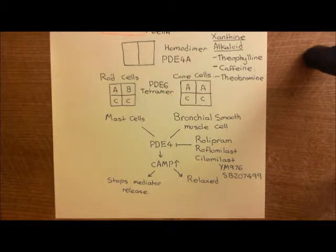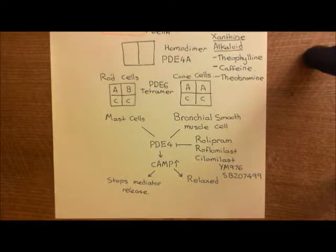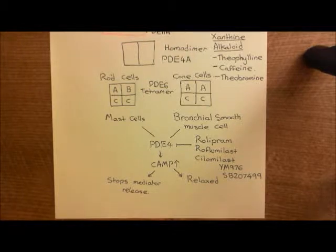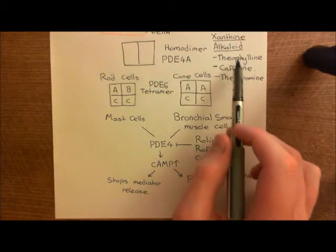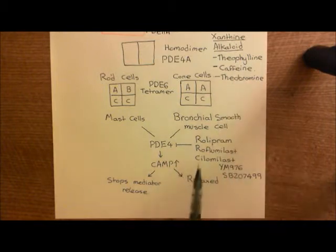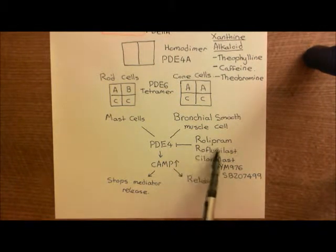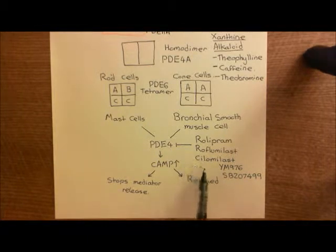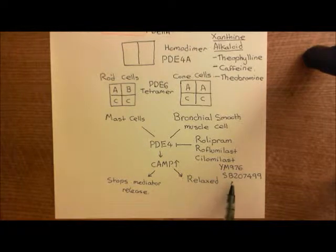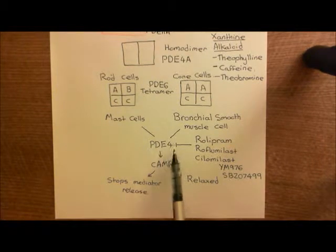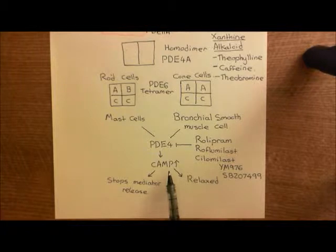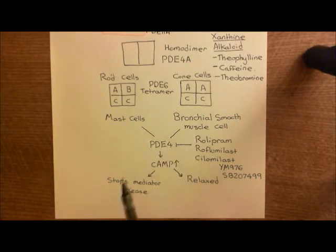Welcome to this next video discussing the use of phosphodiesterase inhibitors to treat asthma. Mast cells and bronchial smooth muscle cells have phosphodiesterase-4 enzymes within their cytoplasm. If you inhibit these PDE4 enzymes, either with a non-selective inhibitor such as theophylline, or with a selective PDE4 inhibitor such as Rolipram, Roflumilast, Cilomilast, YM976, or SB207499, cyclic AMP will go up in the cytoplasm of both mast cells and bronchial smooth muscle cells.